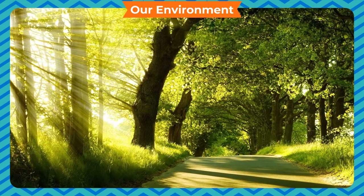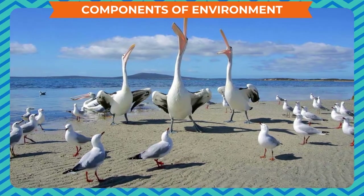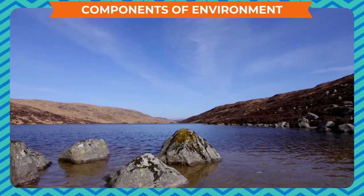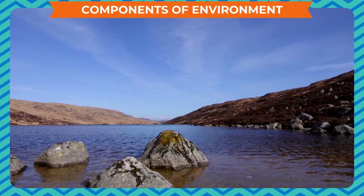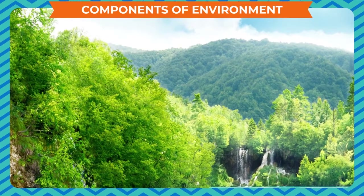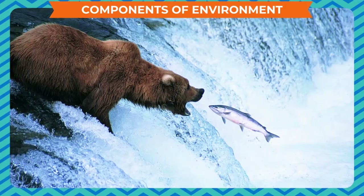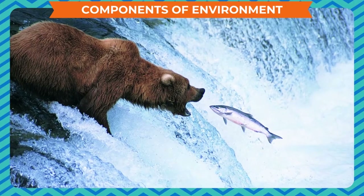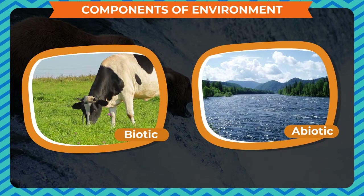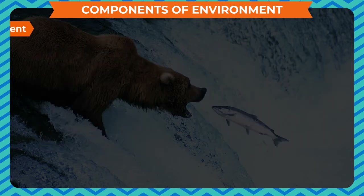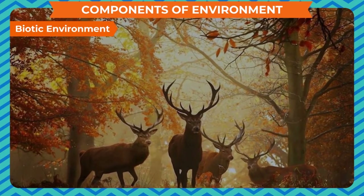All these things are very essential for us to survive and live a healthy life. All of the living and non-living things of which our environment is made up are called components of environment. According to the nature of components, the environment is mainly categorized into two types: biotic and abiotic environment.